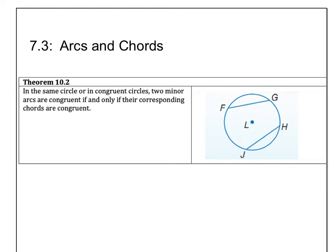In the same circle or congruent circles, two minor arcs are congruent if and only if their corresponding chords are congruent. So imagine this, we know chord FG and chord JH are the same length. If that happens, then arc FG and arc JH will be the same length.